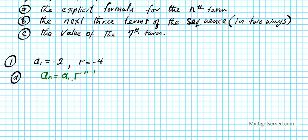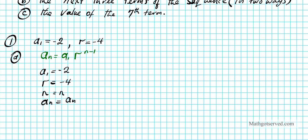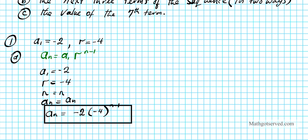We need two known variables. A1 is negative two, the common ratio r is negative four, and an is the unknown we're solving for. Plugging into the formula: an equals negative two times negative four raised to the n minus one. This is the explicit formula for the nth term of the geometric sequence, so let's box that.